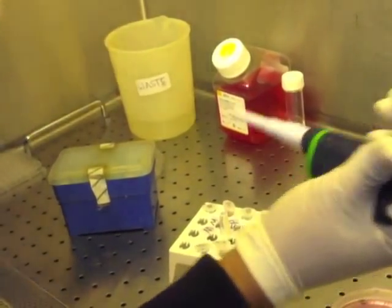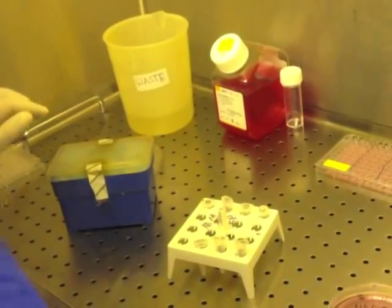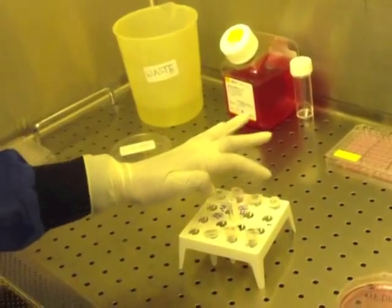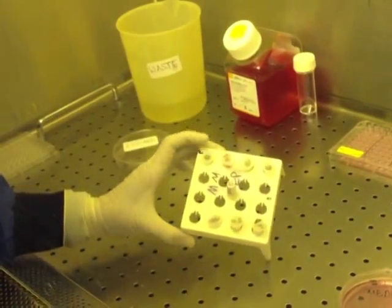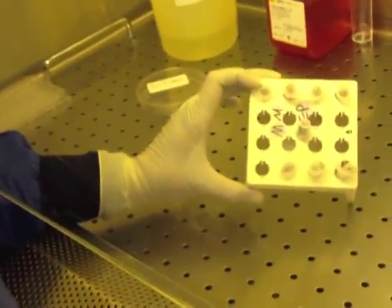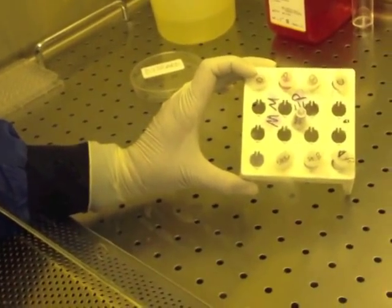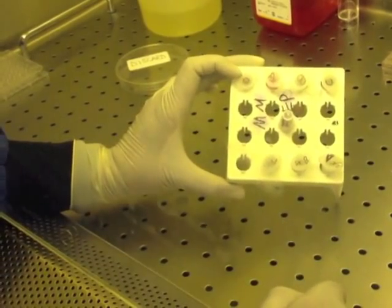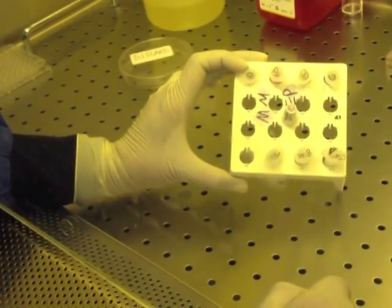Discard your tip in the waste and do the same for drugs B and C. Remember, drug 0 is medium alone, so all you need to do is take 1 ml of medium and add that to your tube 0.